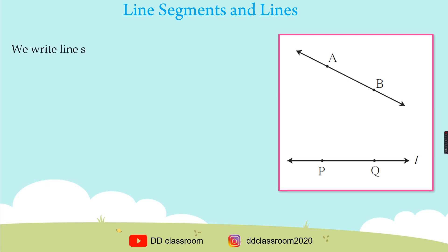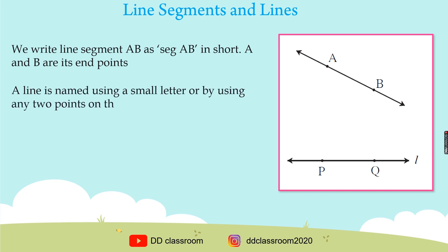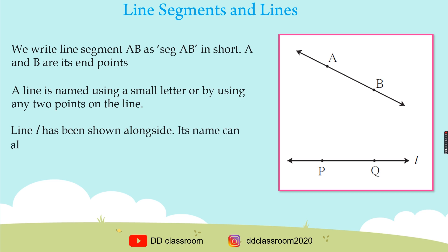We write line segment AB as seg AB in short. A and B are its end points. A line is named using a small letter or by using any two points on the line. Line L has been shown alongside. Its name can also be written as line PQ or line QP.